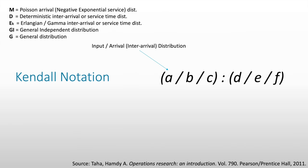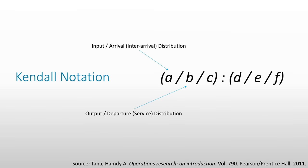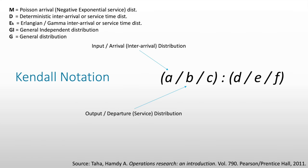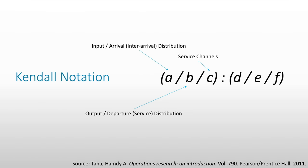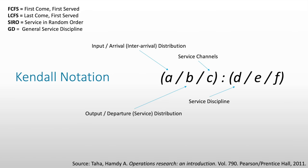Letter B is the output or the departure or the service distribution. Again, it can be either one of the five. Usually we use M — Markovian or Poisson arrival, or since it's service, the negative exponential service distribution. Letter C is the service channels or the number of servers. And then letter D would be the service discipline: either FCFS or first-come first-served, LCFS or last-come first-served, SIRO or service in random order, and lastly general service discipline or GD.